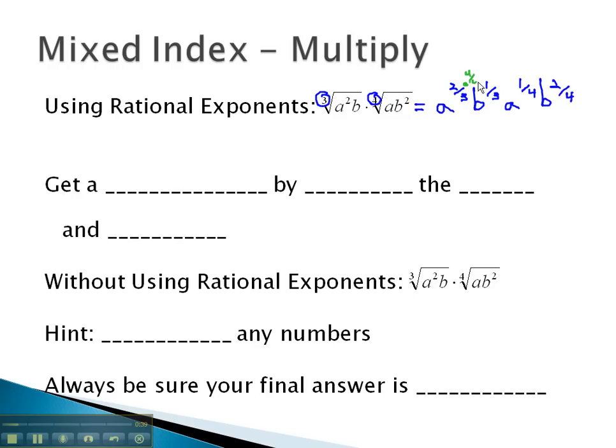By multiplying by 4 over 4 on the first two fractions, and 3 over 3 on the second two fractions, we now have a to the 8-twelfths, b to the 4-twelfths, a to the 3-twelfths, and b to the 6-twelfths. So we would be able to add the exponents together, to get a to the 11-twelfths, b to the 10-twelfths.